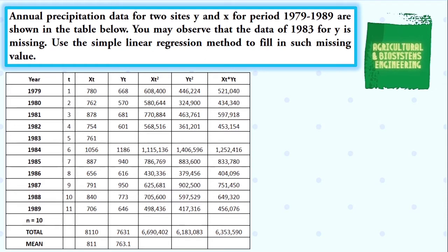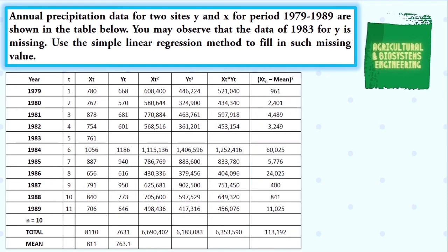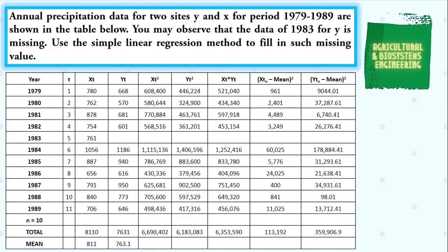The next column is to get the square of the difference of the data from X and its mean, then get the summation. The next column is the same — get the square of the difference of the data from Y and its mean, then get the summation.